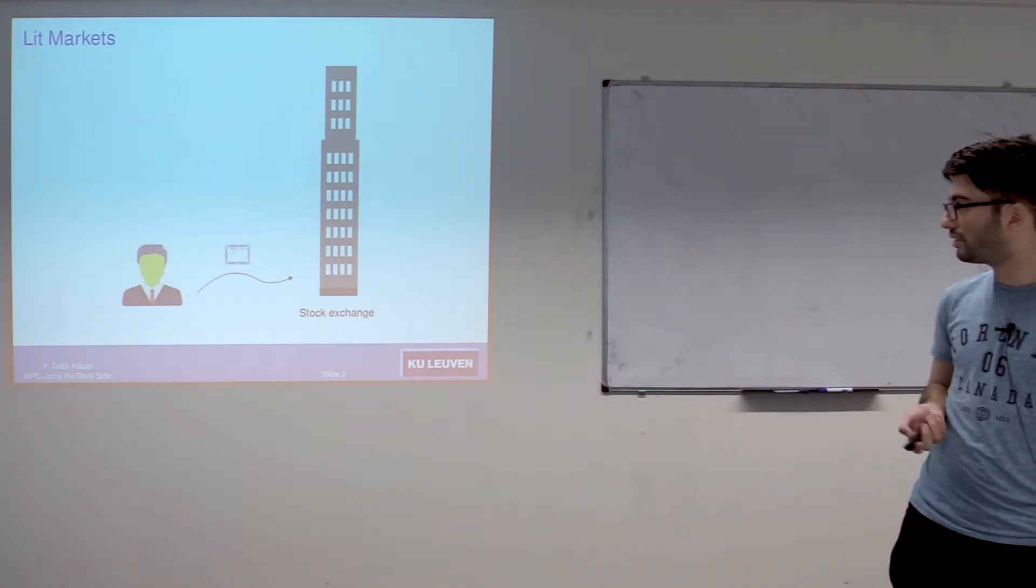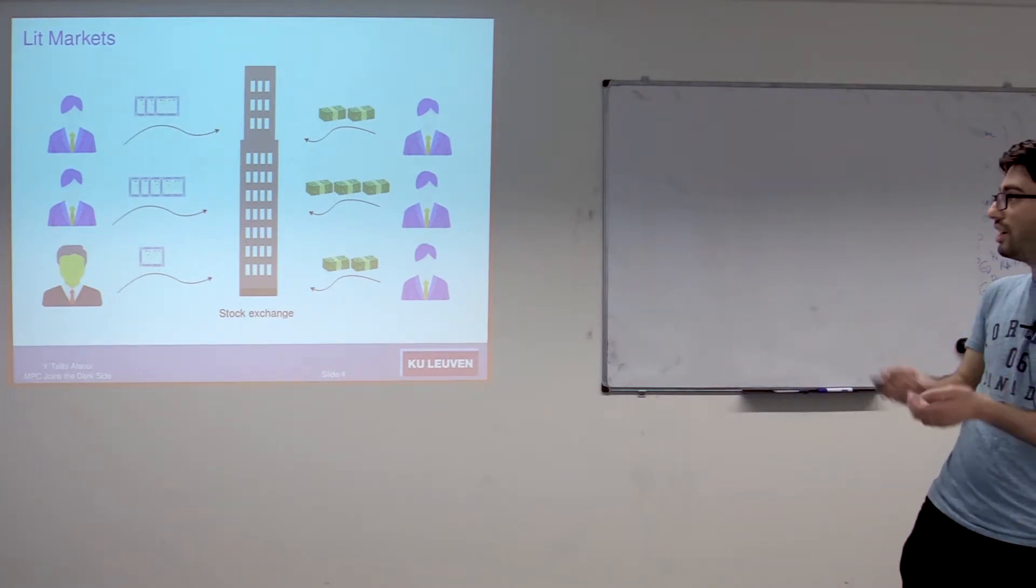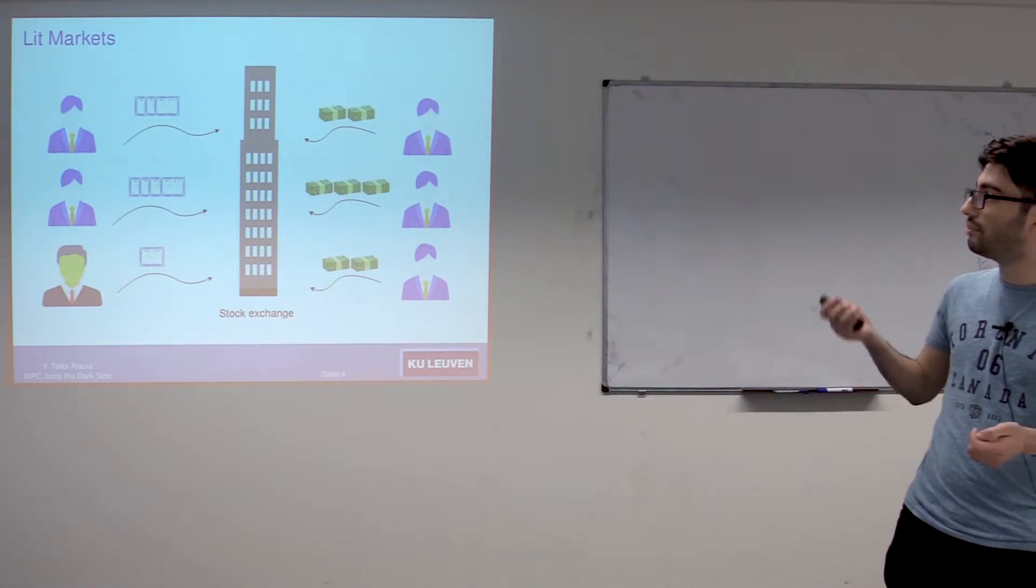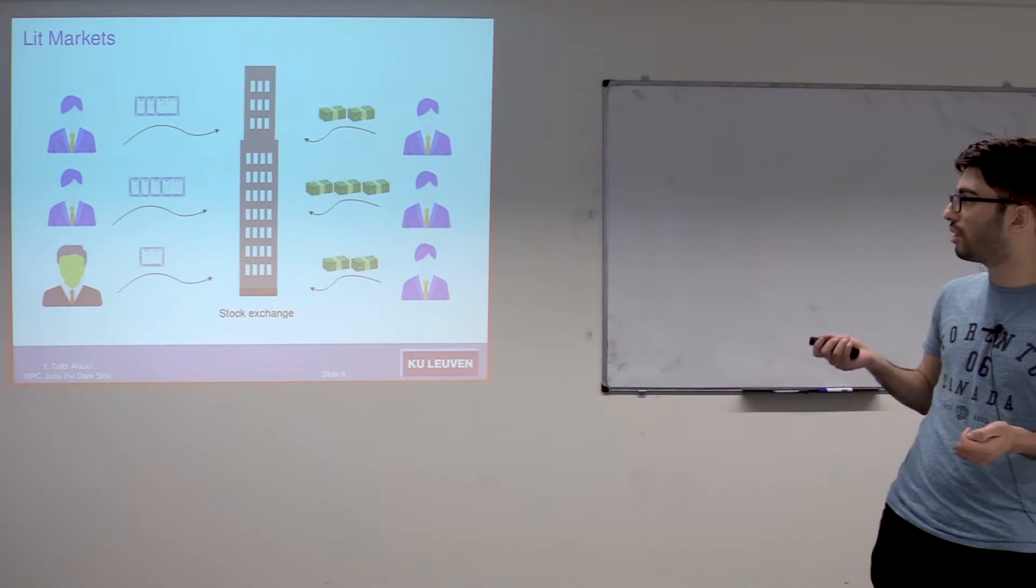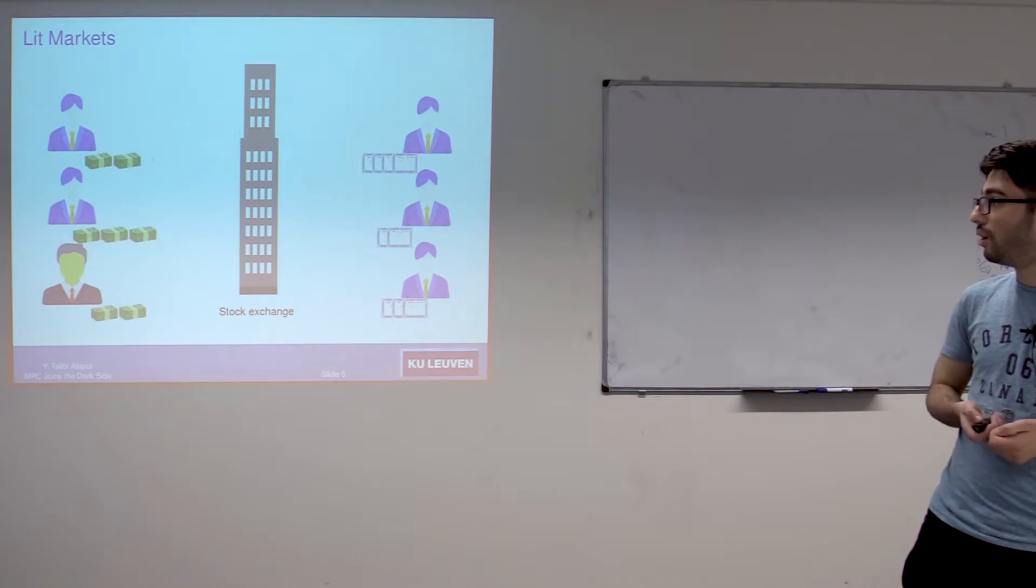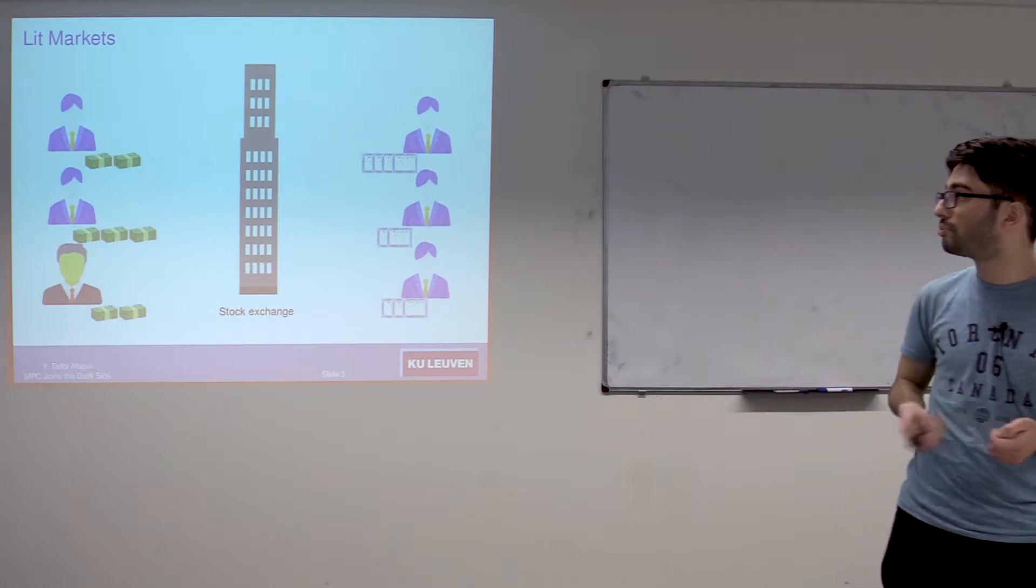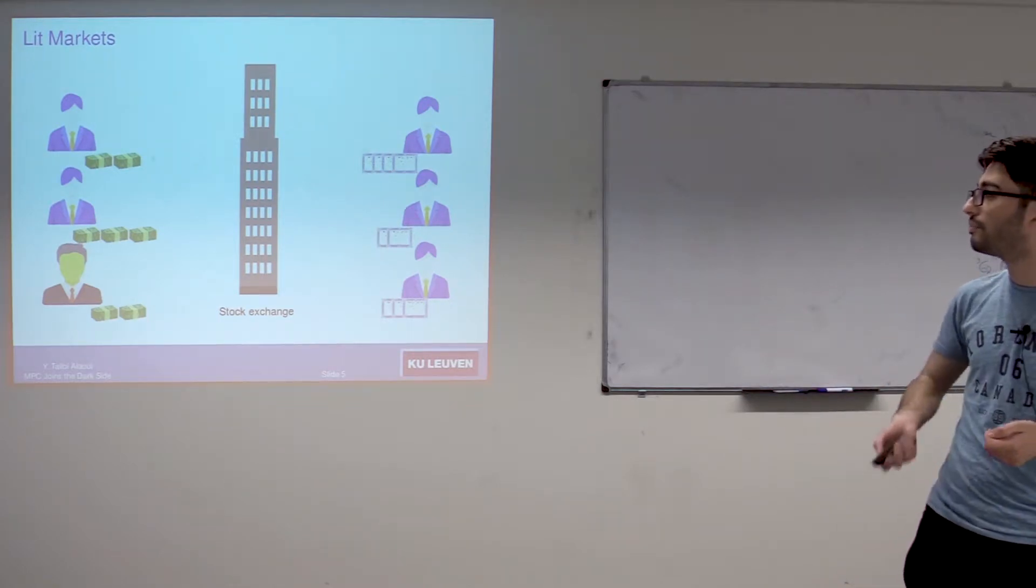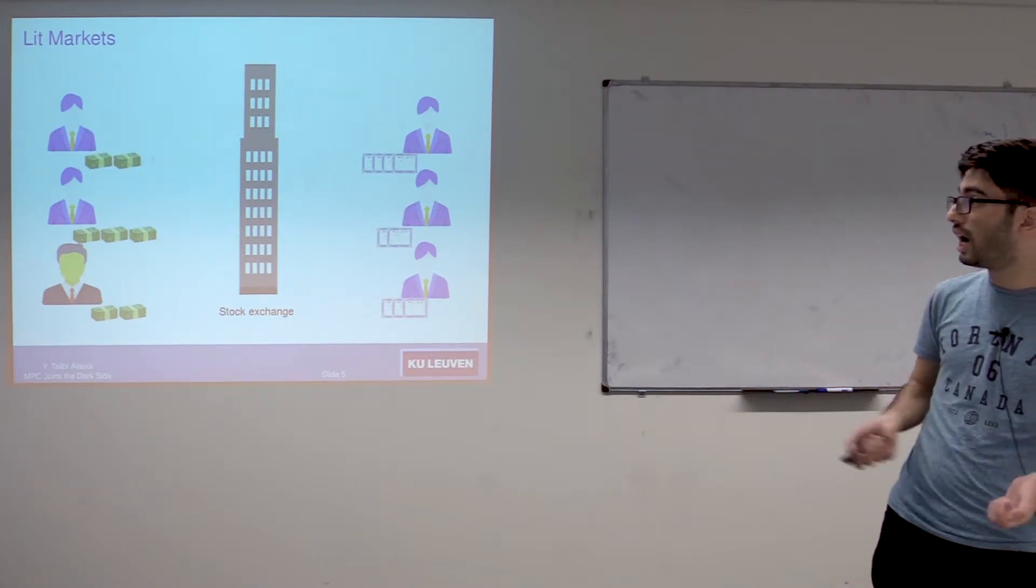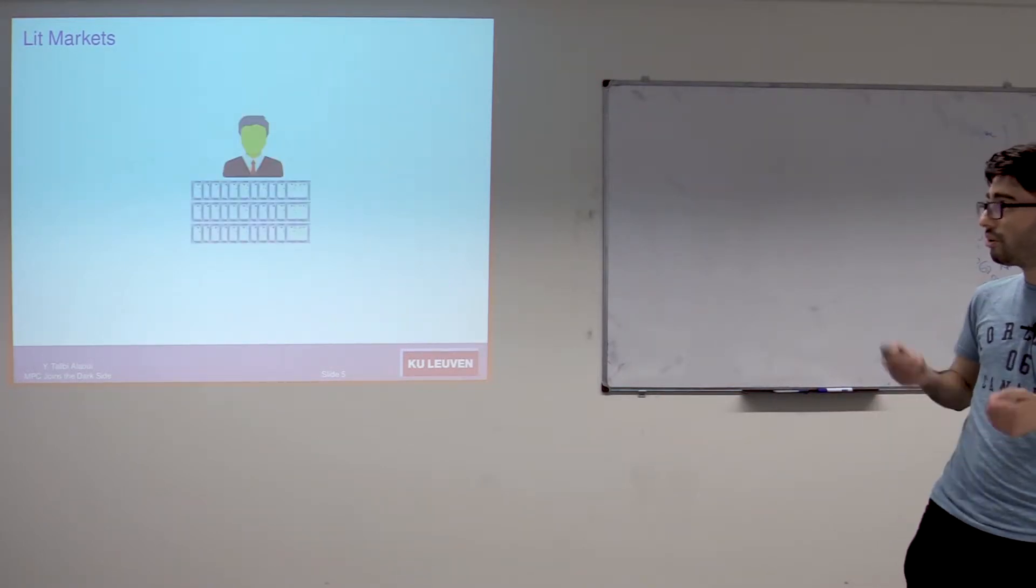Bob might not necessarily be the only one who is interested in selling shares, so what actually happens is that we have a bunch of sellers and a bunch of buyers, and some auction process takes place in the stock market. One thing to note about this auction process is that everything that takes place here is public. For someone observing the stock exchange, he can see that Bob placed his order along with the other businessmen, how big the orders were, etc. Hence the name lit markets.